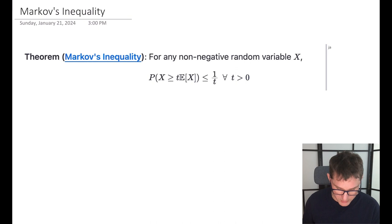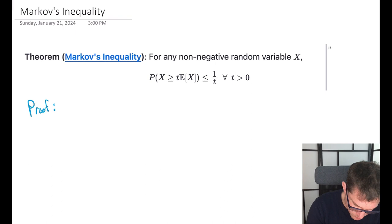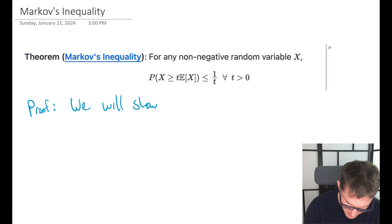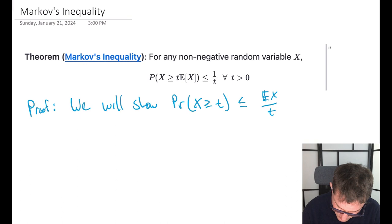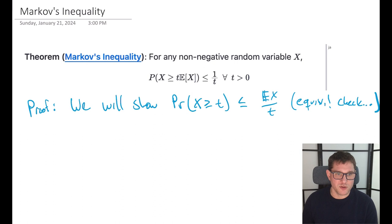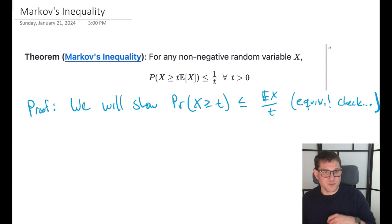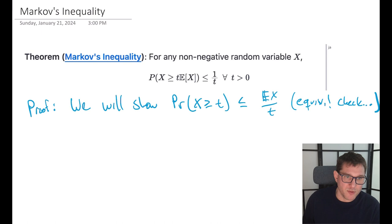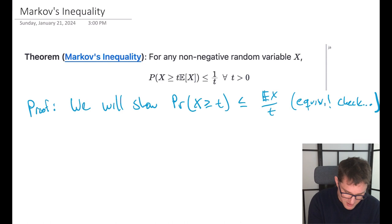Let's prove Markov's inequality. We'll show that the probability that X is greater than or equal to t is less than or equal to the expectation of X divided by t. That's the equivalent statement — you can check that by scaling t appropriately. Now, to prove this equivalent statement, let's define a new random variable Z_t as t times the indicator that X is greater than or equal to t.